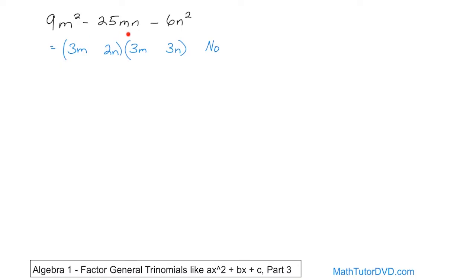You have 9, which means 3 times 3 works, but also 1 times 9 works. And then you have 6, which means 1 times 6 works and 2 times 3 works. So there's a lot of combinations of all these numbers to see when you can get 25 in the middle.